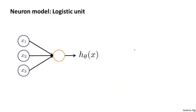In a neural network, or rather in an artificial neural network that we implement in the computer, we're going to use a very simple model of what a neuron does. We're going to model a neuron as just a logistic unit. When I draw a yellow circle like that, you should think of that as playing a role analogous to maybe the body of a neuron. And we feed the neuron a few inputs via its dendrites, or its input wires, and the neuron does some computation and outputs some value on this output wire.